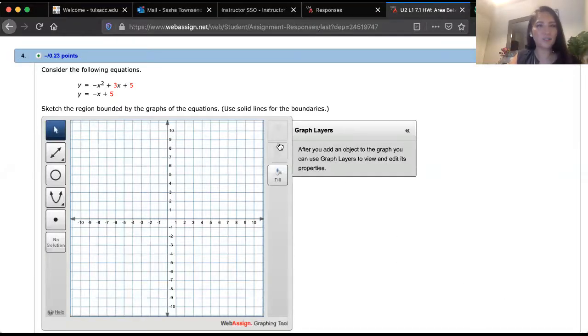Okay, so first we're asked to consider the following functions. We've got a parabola, y equals negative x squared plus 3x plus 5, and we have a line, y equals negative x plus 5, and we're asked to sketch the region bounded by the graphs of the equations and use solid lines for the boundaries.